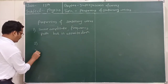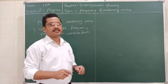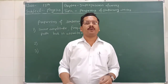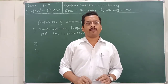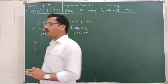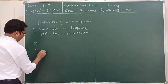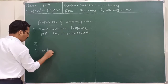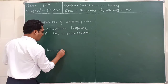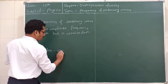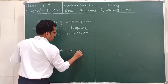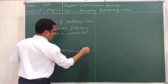The third property is that a stationary wave consists of some points which do not vibrate or vibrate with the minimum amplitude. Such points are called nodes. Nodes are the particles which vibrate with the minimum amplitude.